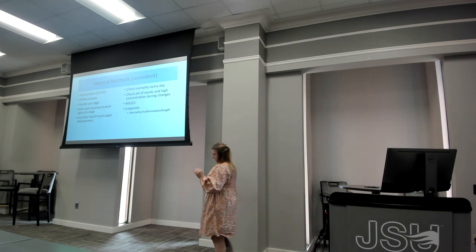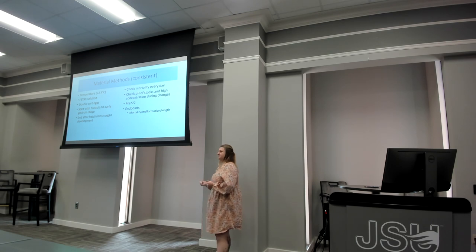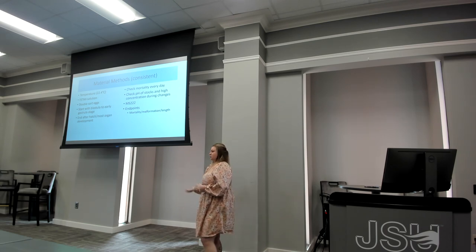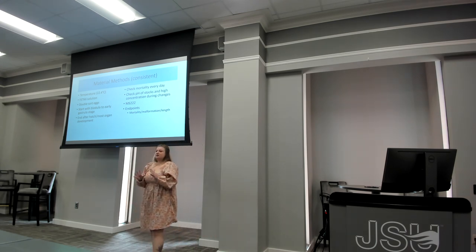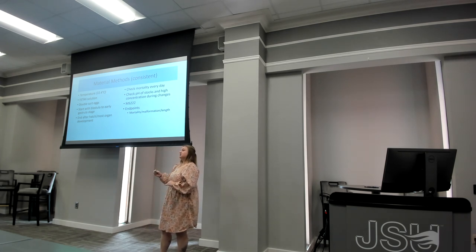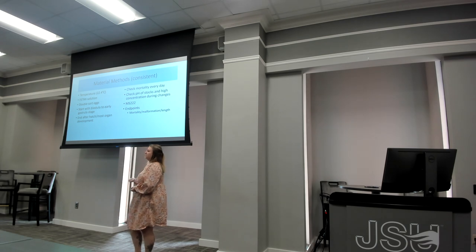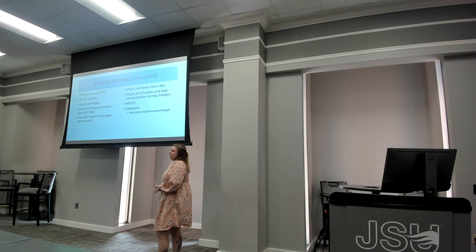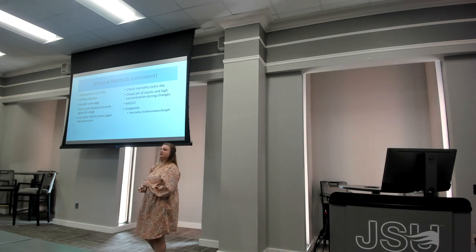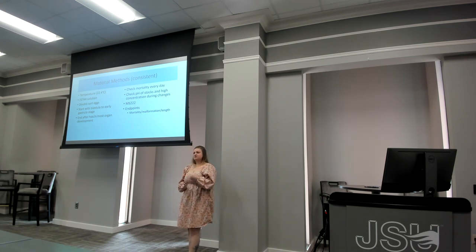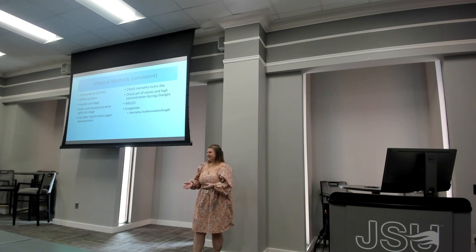For the material methods, there are some consistencies and some differences between the species. For consistencies, we have to double-sort the eggs — any cluster or any eggs we use, we sort them once, go back, and sort them again, making sure to remove bad eggs. We also ensure the eggs are in a blastula or early gastrula stage, or they won't be good to use. Once sorted, we put them in a VTEC solution, they go in an incubator at 22.4°C and stay there throughout the experiment. At the end of each experiment, we check for malformation, mortality, and length measurements, with mortality checked every day. When taking pictures of specimens, we use MS-222 to stun or paralyze them so they don't move around in the dishes.